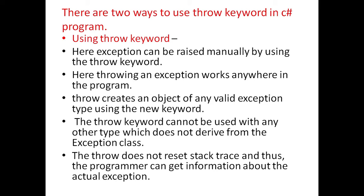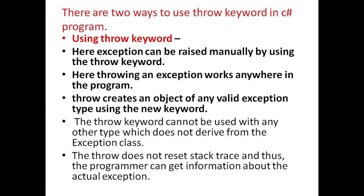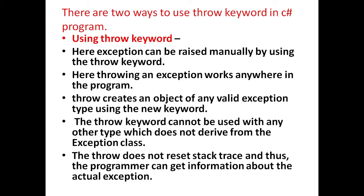There are two ways to use the throw keyword in a C# program. The first is using the throw keyword directly. Exceptions can be raised manually anywhere in the program. Throw creates an object of any valid exception type using the new keyword. The throw keyword cannot be used with any type that does not derive from the exception class. Throw does not reset the stack trace, so the programmer can get information about the actual exception.